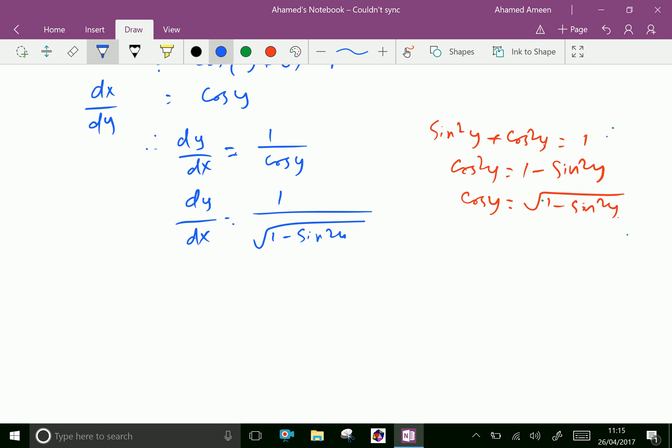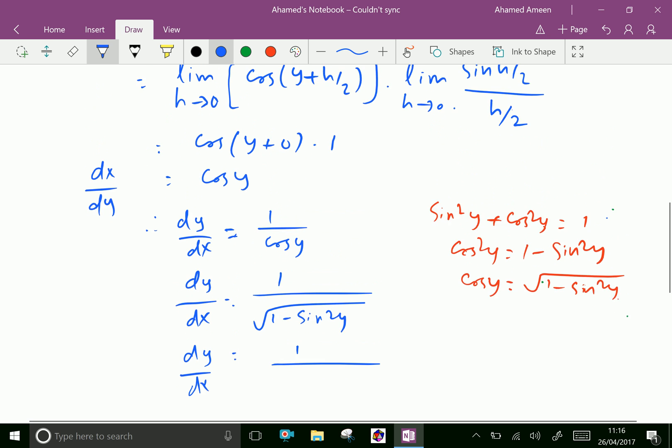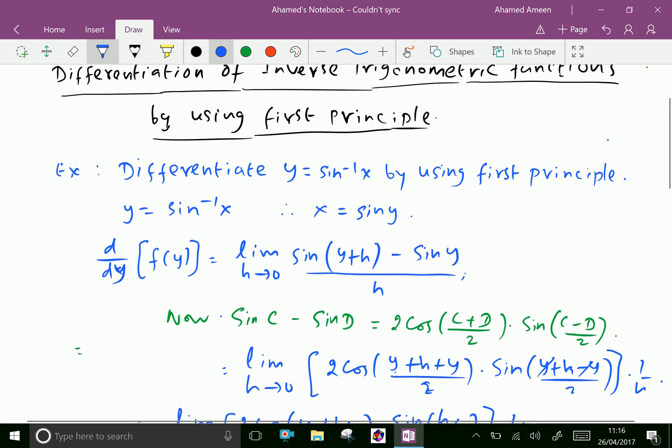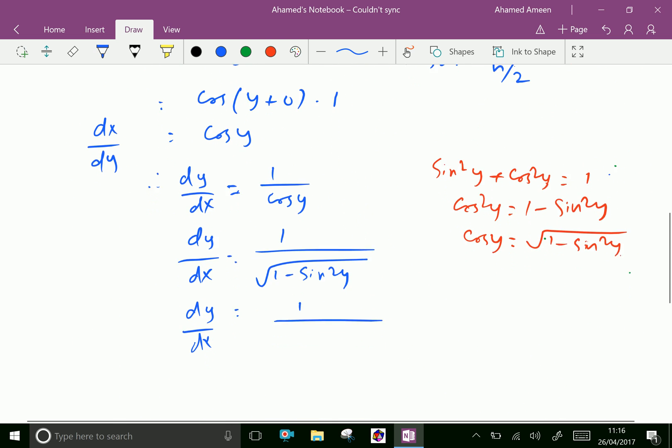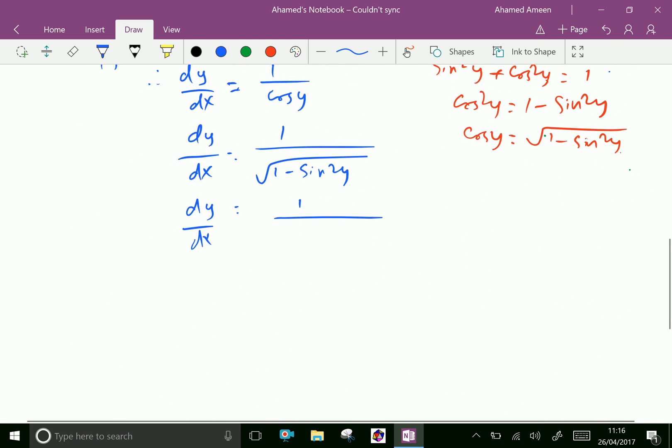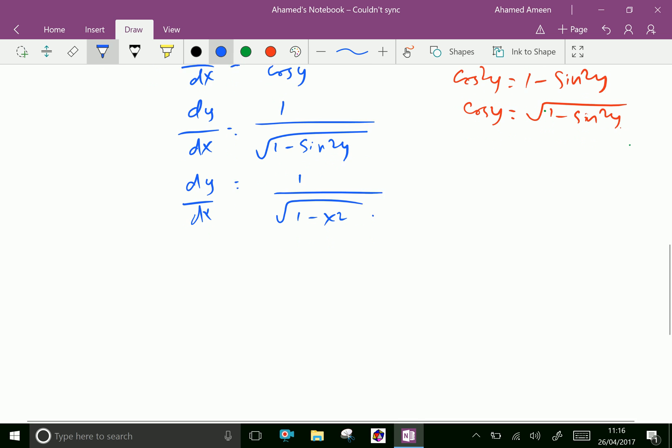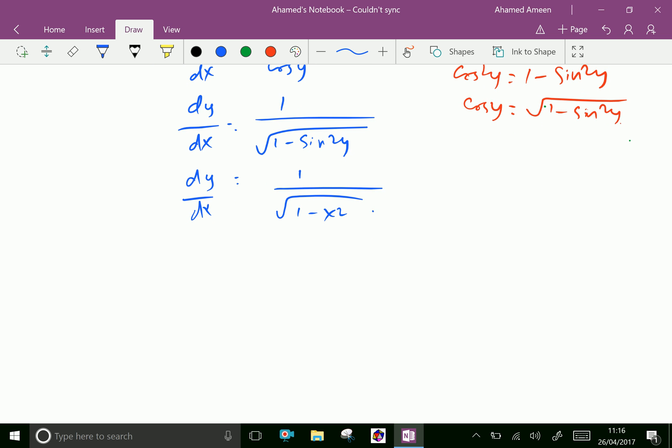We have already let x equal sine y, then sine squared y is x squared. Therefore, dy by dx of sine inverse x is 1 over square root of 1 minus x squared.